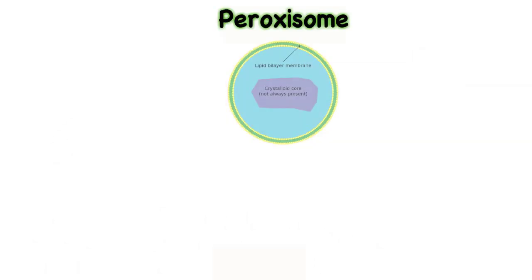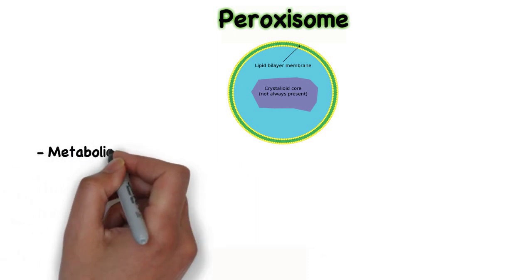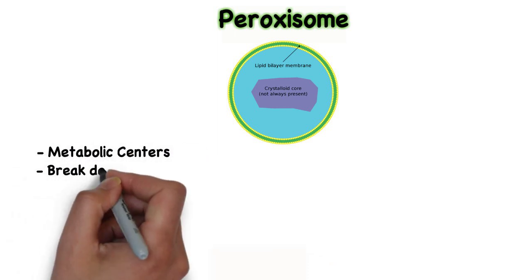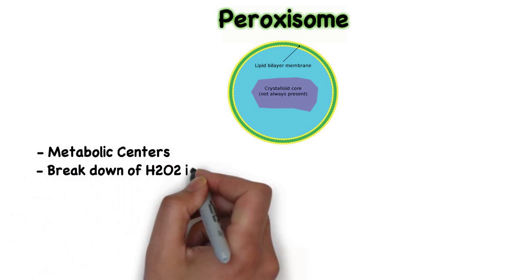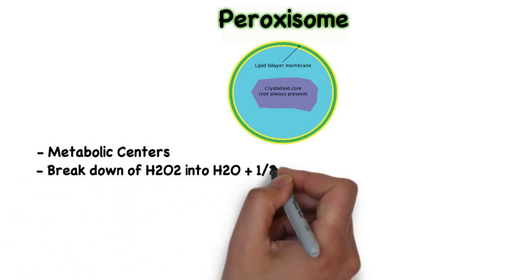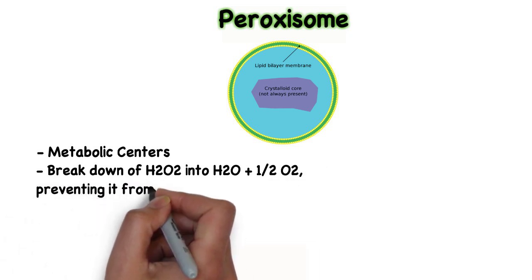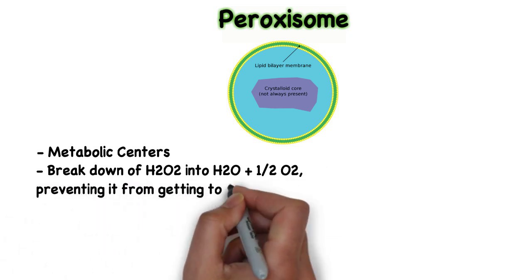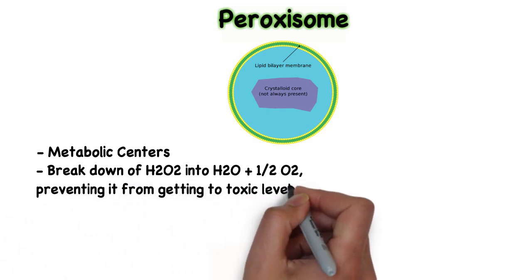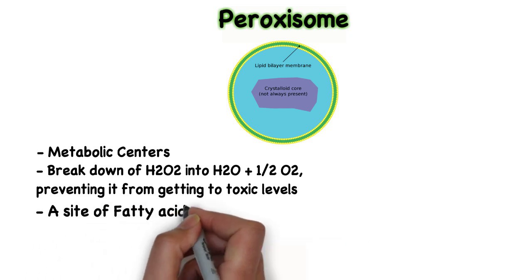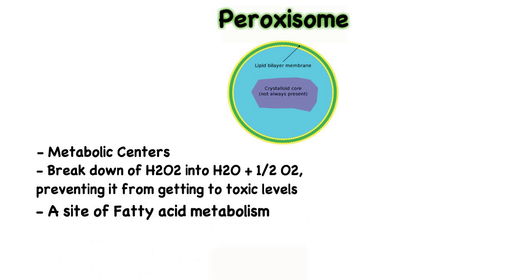Peroxisomes are metabolic centers of the cell that deal with the breakdown of H2O2 into H2O and O2, preventing it from reaching toxic levels. They are also a site for fatty acid metabolism.